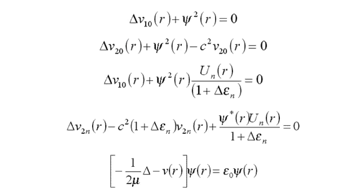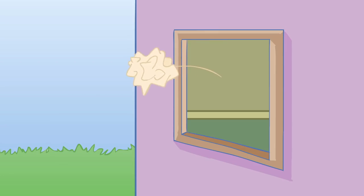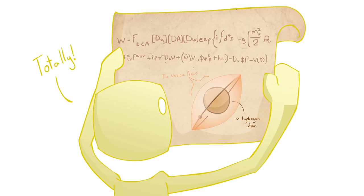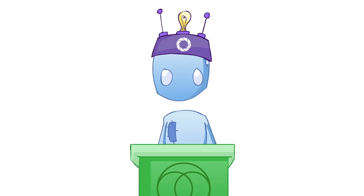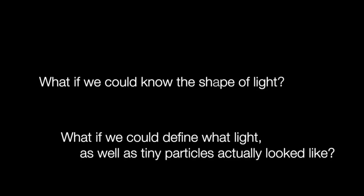Because of all of our fancy equations as described earlier, we have kind of thrown all ideas about what light could actually look like out the window in favor of a complex equation. I want to take it back to simple. What if we could know the shape of light? What if we could actually define what the structure of light, as well as every particle and thing in existence, were?